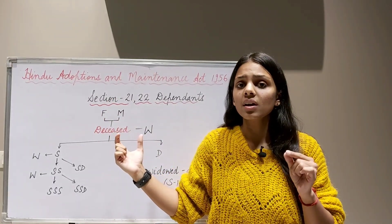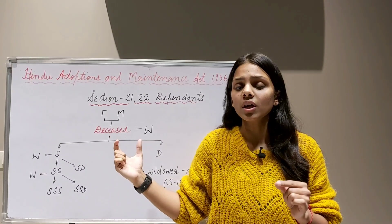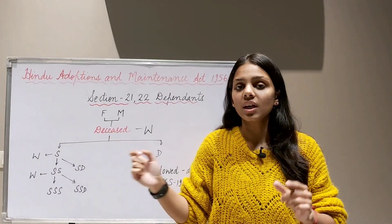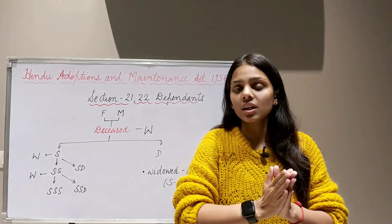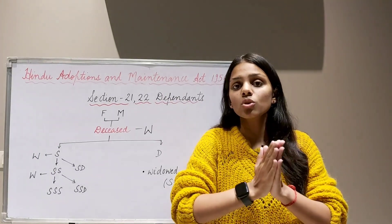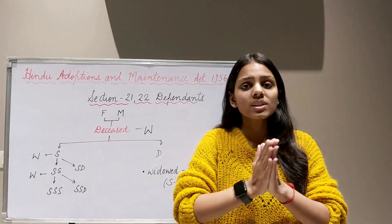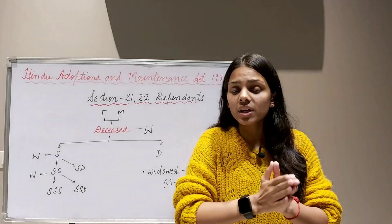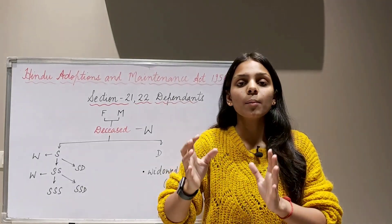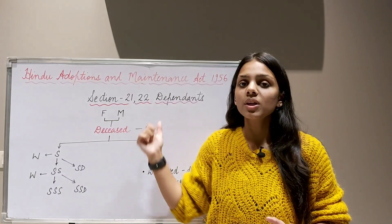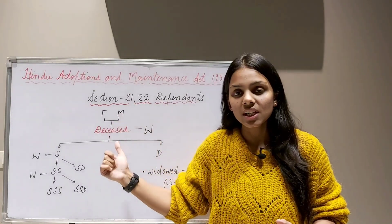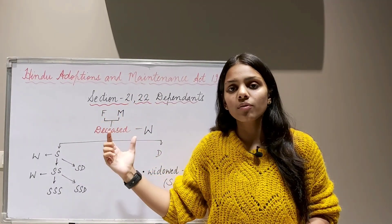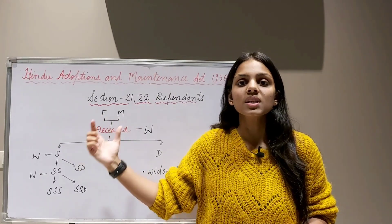Section 24 of this Act says that maintenance will be given to a person who is Hindu by religion, and a person will forfeit his or her right to claim maintenance under certain conditions. Whether a person is deceased, dependent, or Hindu — that is why we use the term 'Deceased Hindu.'